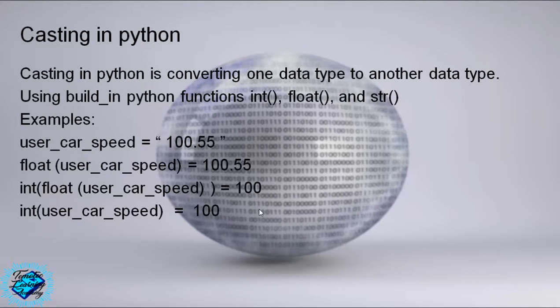Casting in Python. Casting in Python is converting one data type to another type using built-in Python functions: int(), float(), and str().